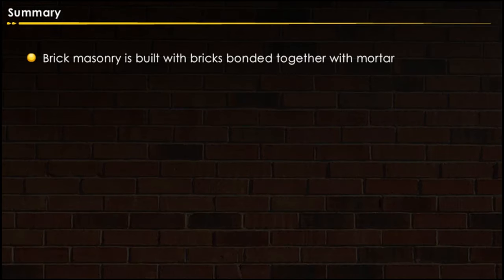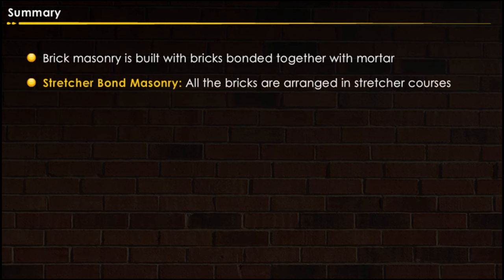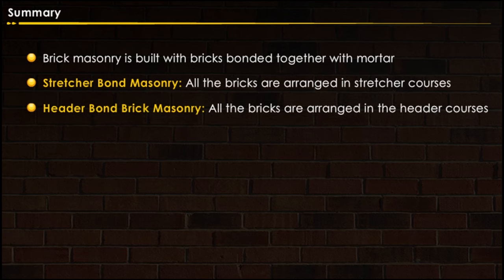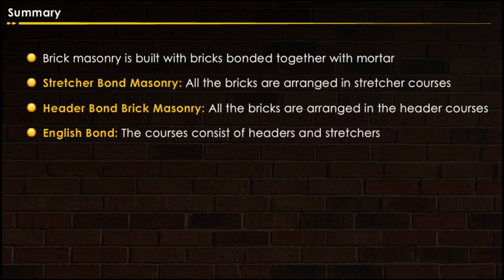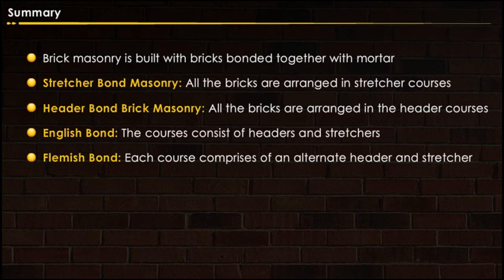Let us summarize what we have learned in this lesson. Brick masonry is built with bricks bonded together with mortar. In stretcher bond masonry, all the bricks are arranged in stretcher courses. In header bond brick masonry, all the bricks are arranged in the header courses. English bond courses consist of headers and stretchers. In Flemish bond, each course comprises of an alternate header and stretcher.